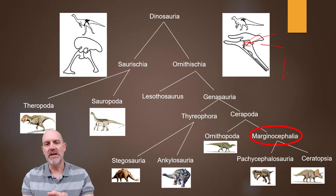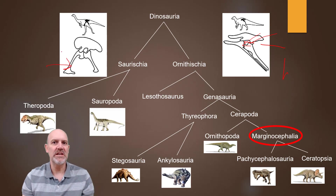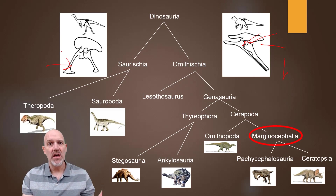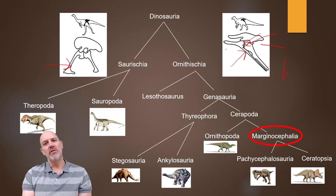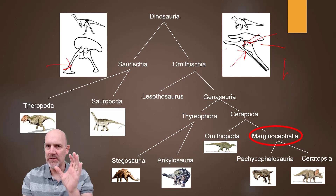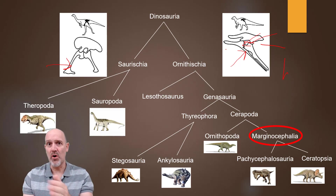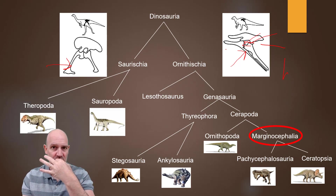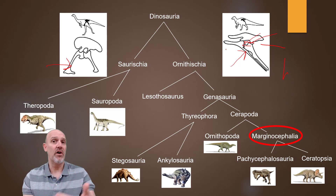And then it splits: we have Saurischia and we have Ornithischia. For the Saurischians, the synapomorphy is the pubis bone pointing anteriorly. And for the Ornithischians, we've got the pubis bone pointing posteriorly. For Ornithischians, we also have the predentary bone — that's the bone right at the bottom of the jaw that doesn't have any teeth in it; it is basically just keratin, a bone covered in keratin. So those were the major synapomorphies for Ornithischians.